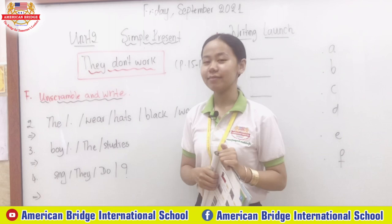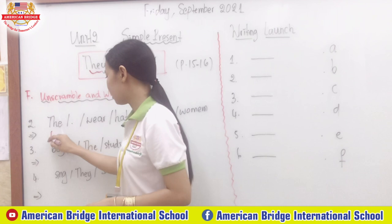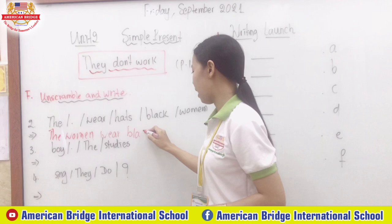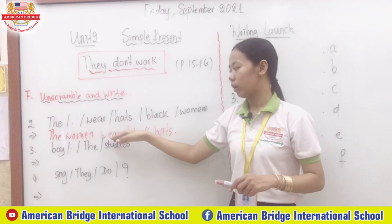Welcome back, everyone. Number two — how could you unscramble this into a complete sentence? We start with 'the women.' The women wear — very good — black hats. So we have subject, verb, and object. 'The women' is a plural subject, so we use 'wear' here without an 's.'